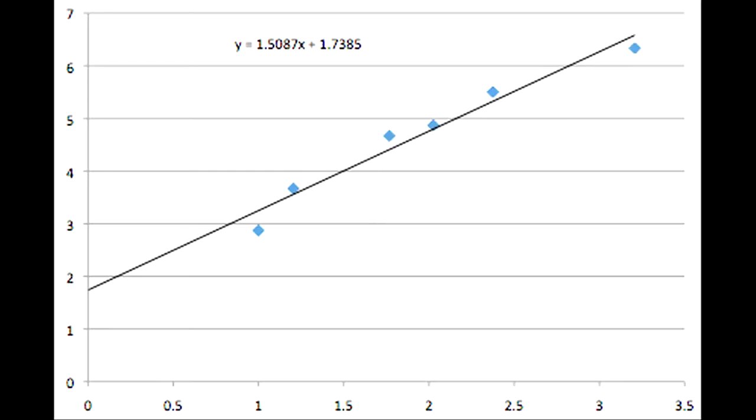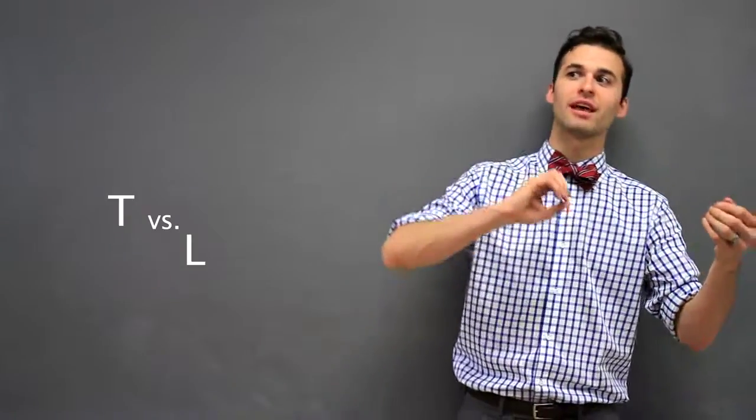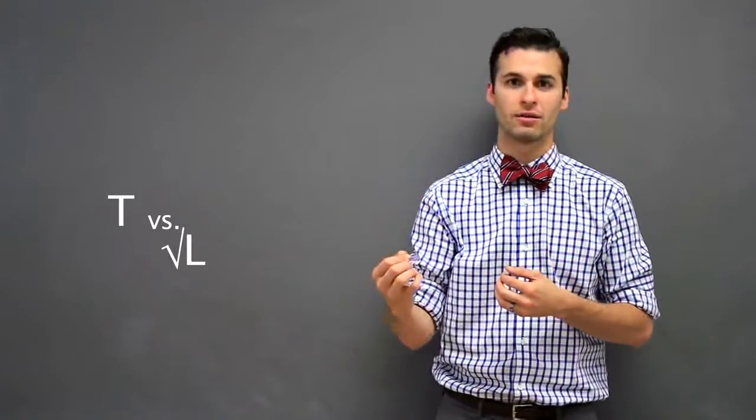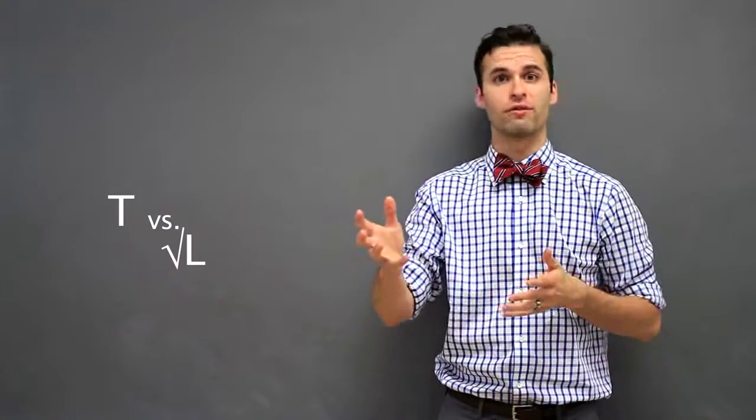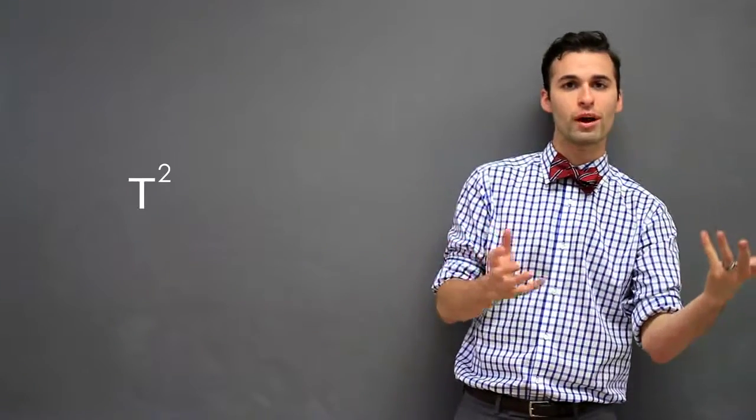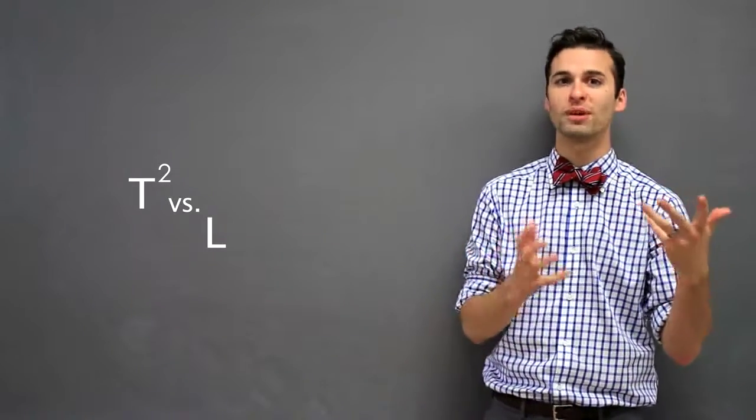It's not as linear as I'd like it to be. Because I only graph period versus length, the relationship is period and the square root of L. So I should either graph T versus the square root of L, or I can graph T squared versus L. Now that does change what my slope ends up being.